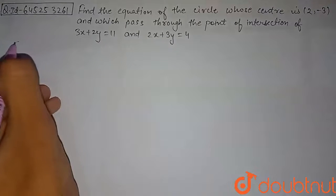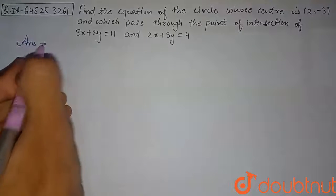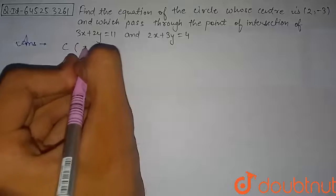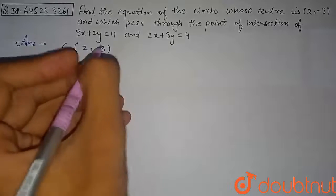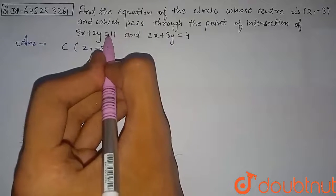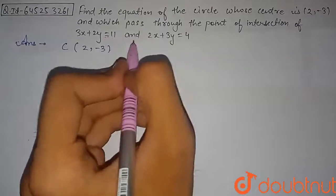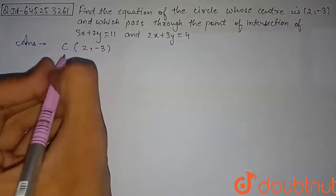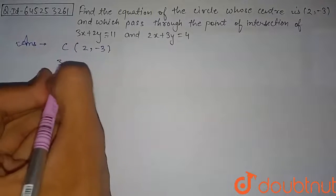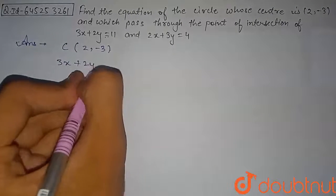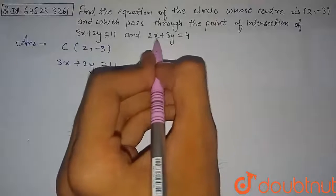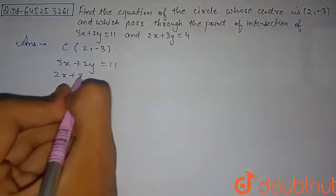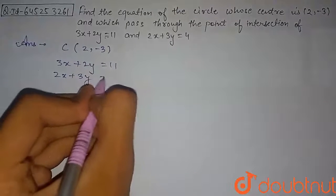Let's begin with the solution. The center is given as C with coordinates (2, -3), and we have to find the point of intersection of the two lines through which the circle passes. The first equation of the line is 3x + 2y = 11 and the second equation is 2x + 3y = 4.